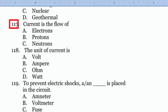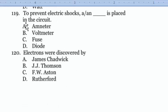Question 117: Current is the flow of electrons, option A. Question 118: The SI unit of current is ampere, option B. Question 119: Electrons were discovered by J.J. Thomson, option B.